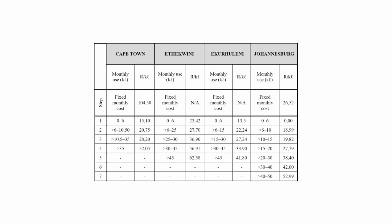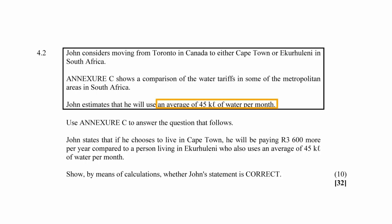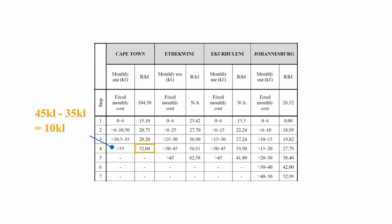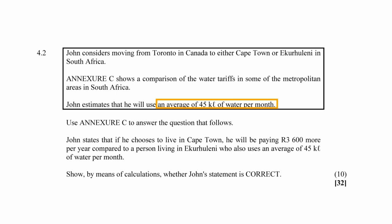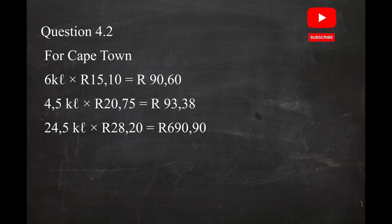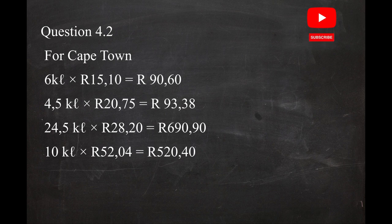In step four, the range is greater than 35 kilolitres. Because the average usage is 45 kilolitres per month, the amount chargeable is 45 − 35 = 10 kilolitres, at R52.04 per kilolitre. You must subtract 35 kilolitres because it was already charged in steps one, two, and three. The cost for step four is 10 kilolitres × R52.04 = R520.40.